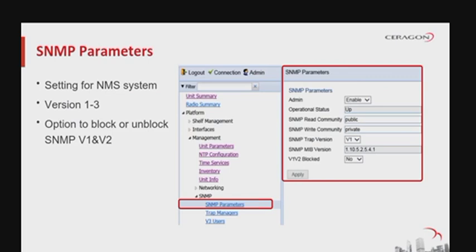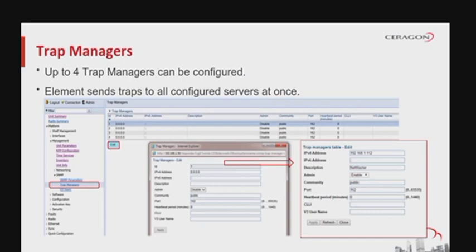The IP20C can work with Simple Network Management Protocol, or SNMP, configurable under Platform > Management > SNMP > SNMP Parameters. SNMP is a standard protocol for collecting and organizing information about managed devices on IP networks and for modifying that information to change device behavior. SNMP traps are unsolicited information alarms sent from the element as agent toward the SNMP server as manager, enabling the agent to notify the management station of significant events by way of an unsolicited SNMP message. Up to four trap managers can be configured under Platform > Management > SNMP > Trap Managers.